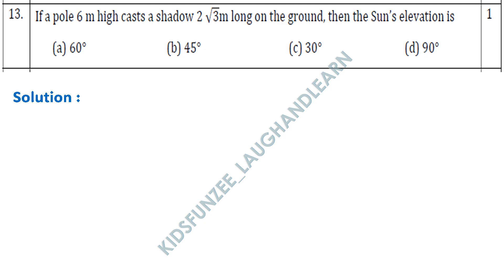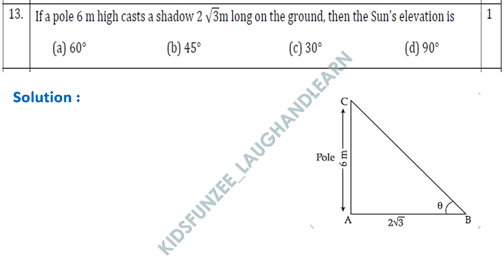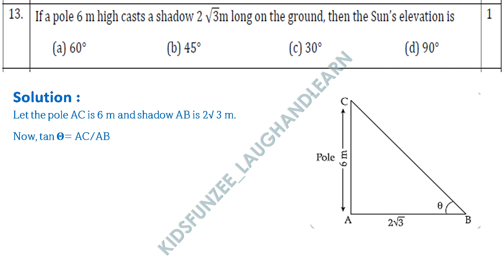Question 13: If a pole 6 metres high casts a shadow 2√3 metres long on the ground, what is the sun's elevation? Let's simplify through a figure. The pole AC = 6 m (perpendicular), shadow AB = 2√3 m (base), and we need to find angle θ. tan θ = perpendicular / base.